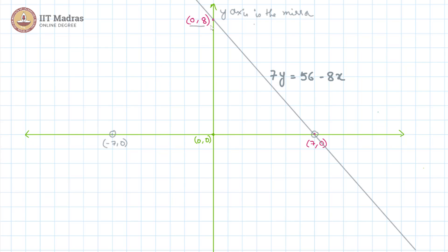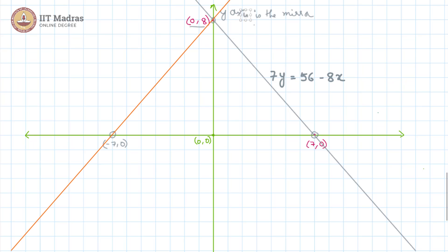However, 0 comma 8 since it is already on the y axis, its reflection is going to coincide with itself. So, this is the other point of the reflection. And thus, the mirror image for this line is going to be this other line which passes through these two points minus 7 comma 0 and 0 comma 8.